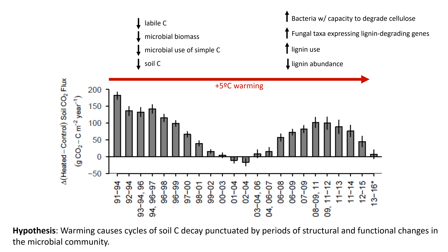When we go out to the second phase of respiration, we see that the microbial community has shifted. We see an increase in the relative abundance of taxa with the capacity to degrade organic matter — increased bacterial capacity to degrade cellulose and an increased number of fungal taxa expressing lignin-degrading genes. This is associated with increased lignin use and a decline in the relative abundance of lignin.